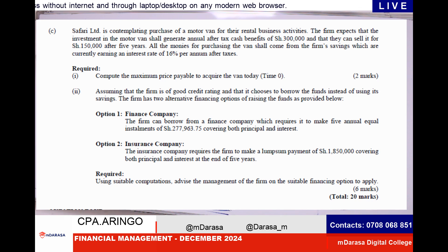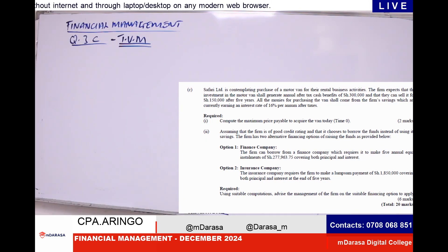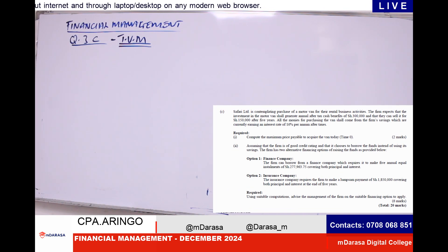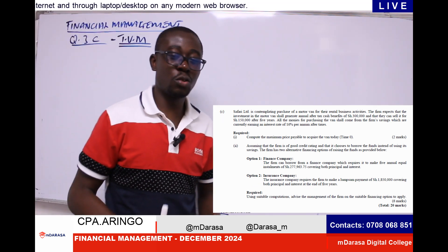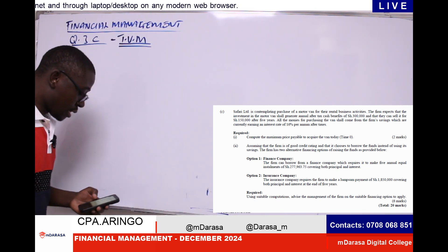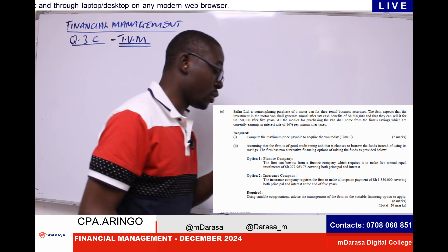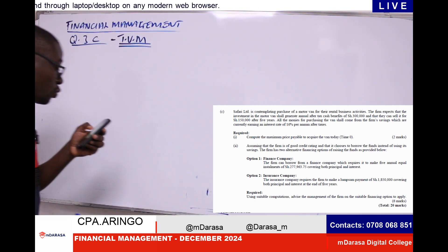Once you've been given that question, as I've always said, the first thing you must always do — by now I know you know what Molimo was going to say — is to smile. Because you have the knowledge, and what you're doing is simply applying the same. The clue here is that we are required to compute the maximum price payable to acquire the van today.